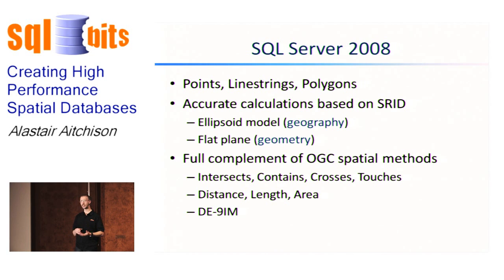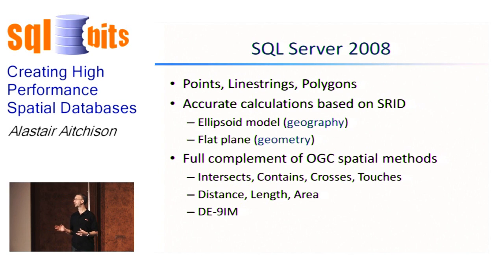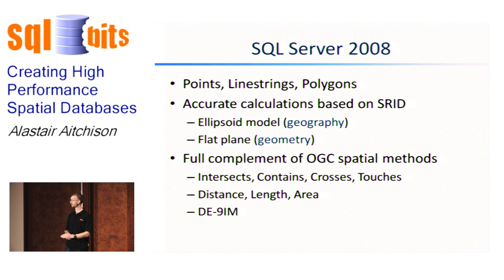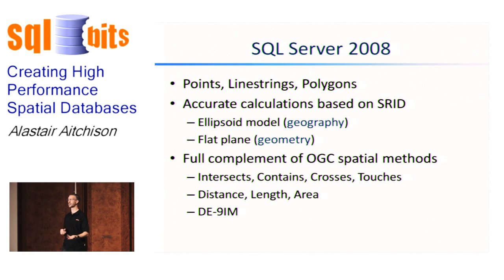When you perform calculations using spatial methods of the geometry and geography data types, those methods perform calculations based on a spatial reference system. For geography, the spatial reference system defines the shape of the Earth onto which you're doing your calculations. The one you're probably most familiar with is the WGS84 model, used by global positioning systems. There's also the NAD83 model common in America. For the geometry data type, you can use state plane coordinate systems or national grids. So we get much more accurate calculations than we used to.